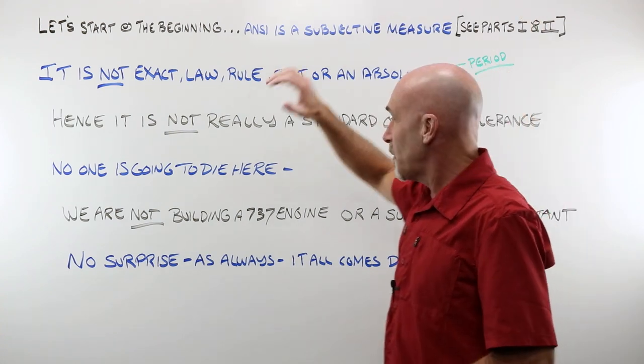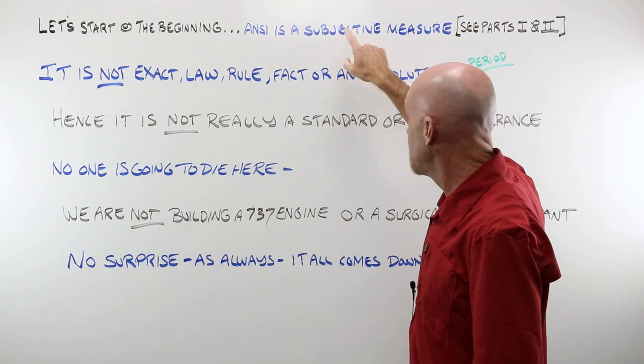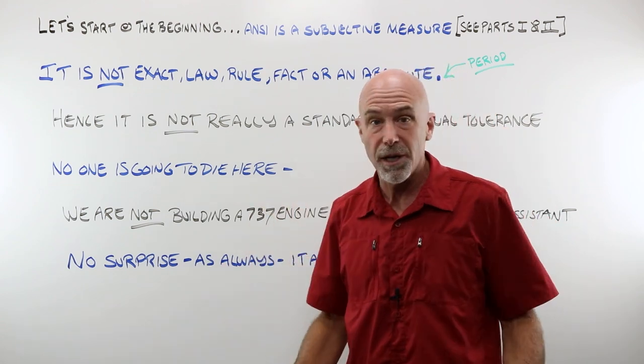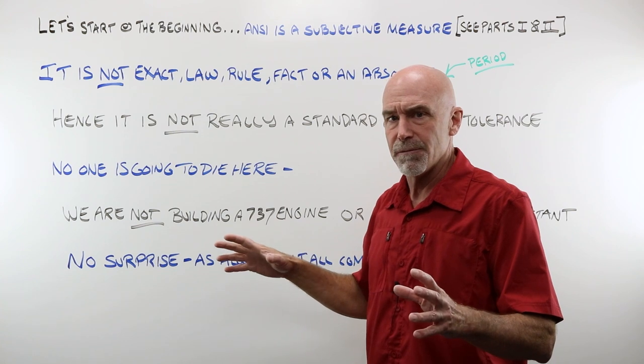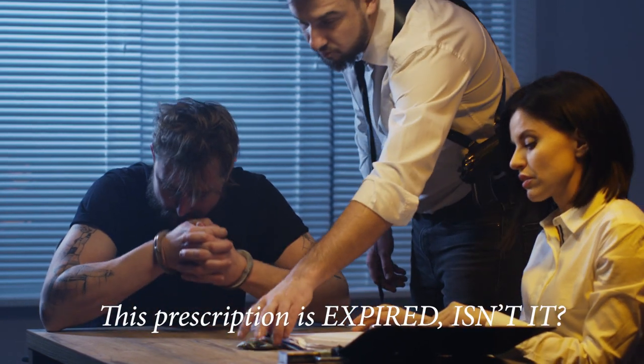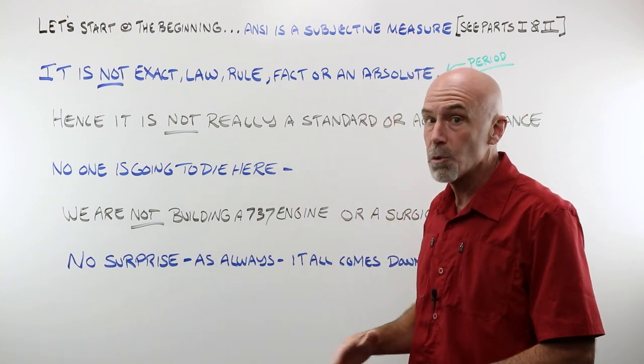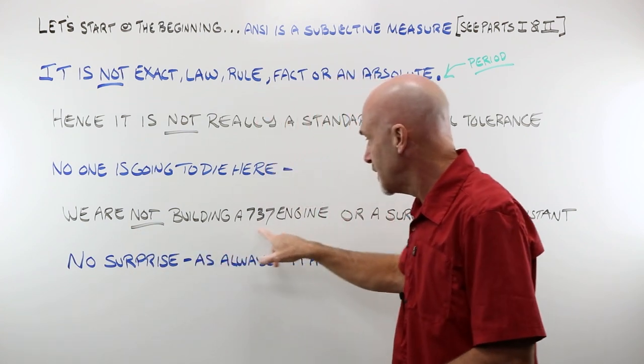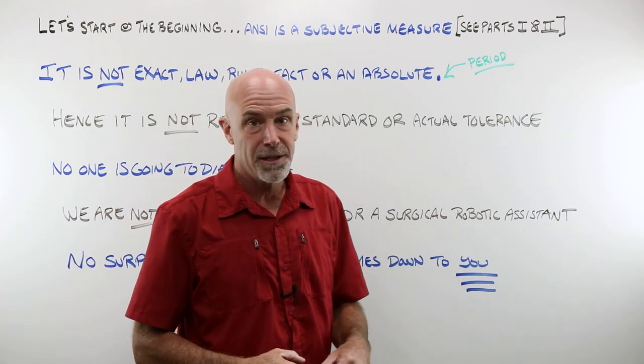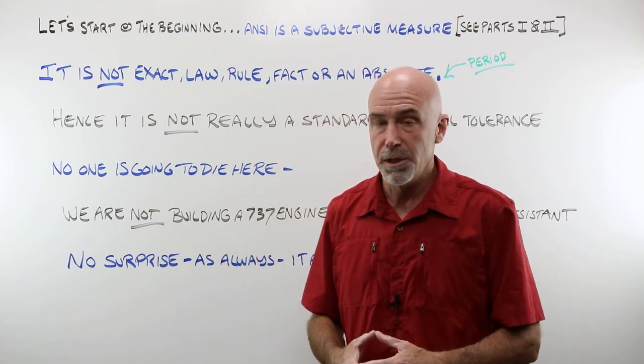From parts one and part two, once again, no one is going to die here. When you grasp the concept of subjective versus objective, and you realize that ANSI is not really a standard or an actual application of real tolerance, you start getting out of the crazy stuff. You start getting away from thinking that they're optical police, and that people are going to come and arrest you if you fill an expired prescription. All the Looney Tunes stuff, when you start getting your head around this, goes away. We are not building a 737 engine. We're not building a surgical robotic assistant. We're making and checking in a pair of glasses. And there is a huge difference between those things.